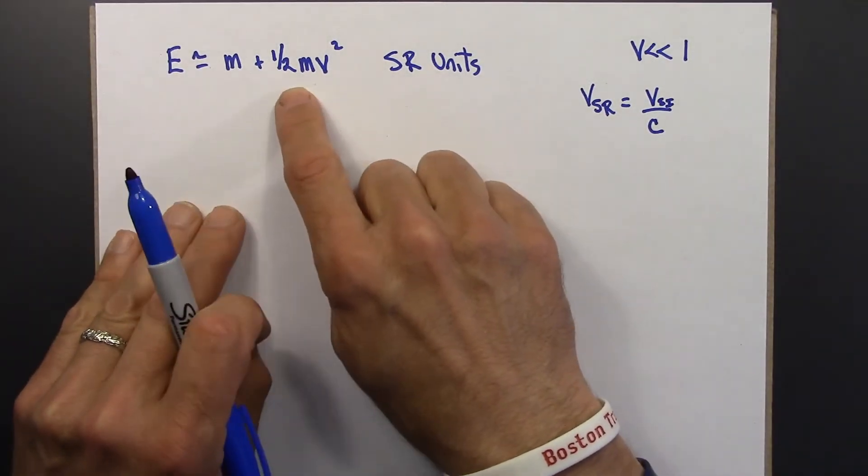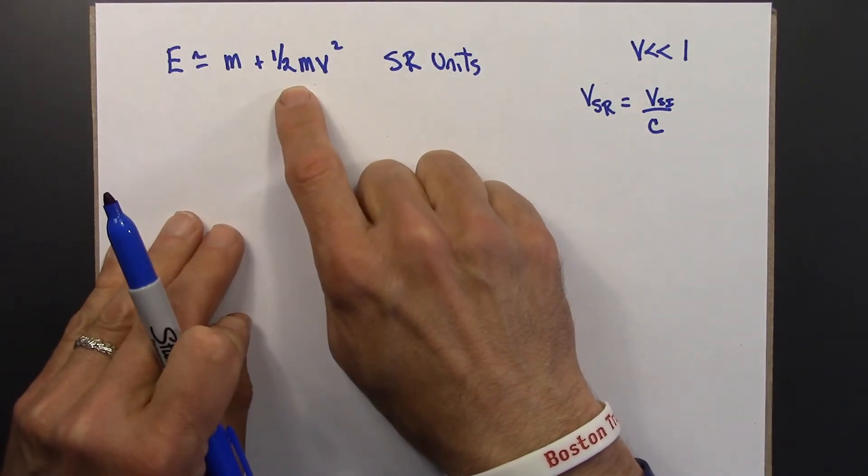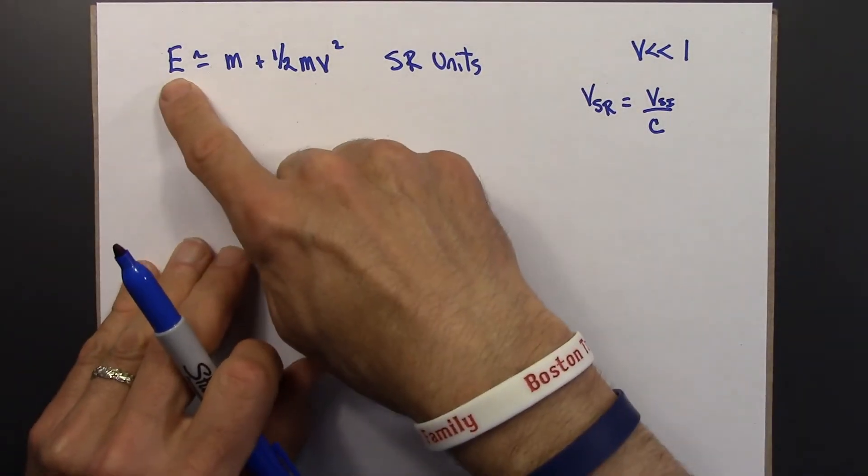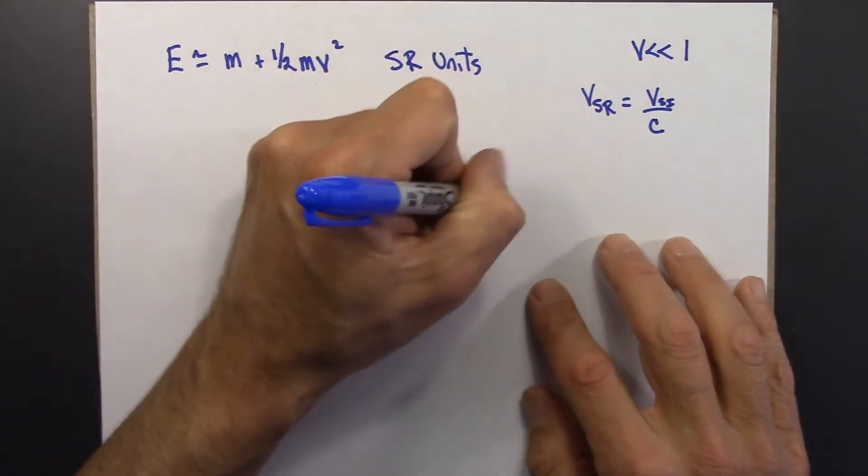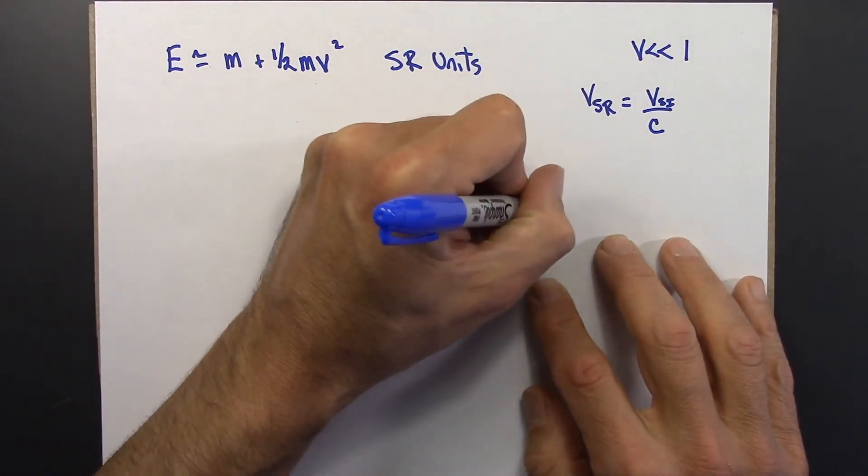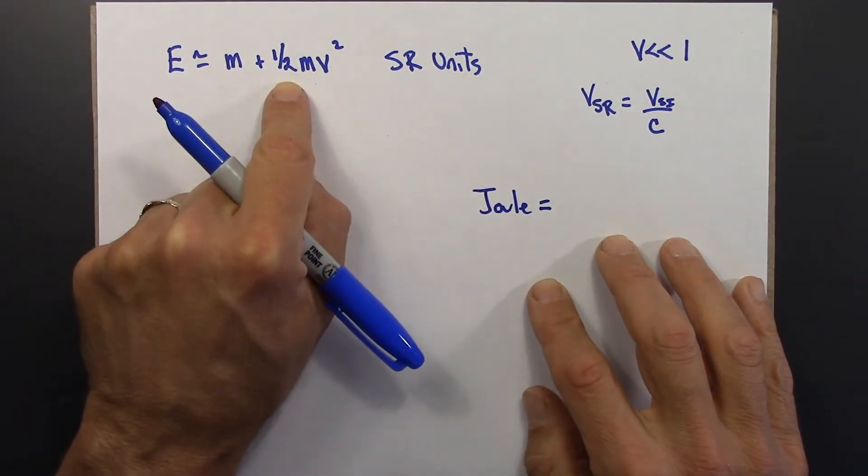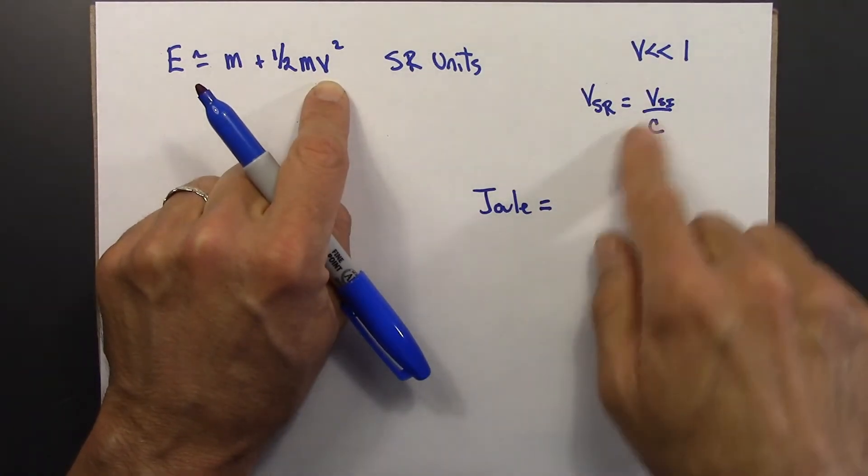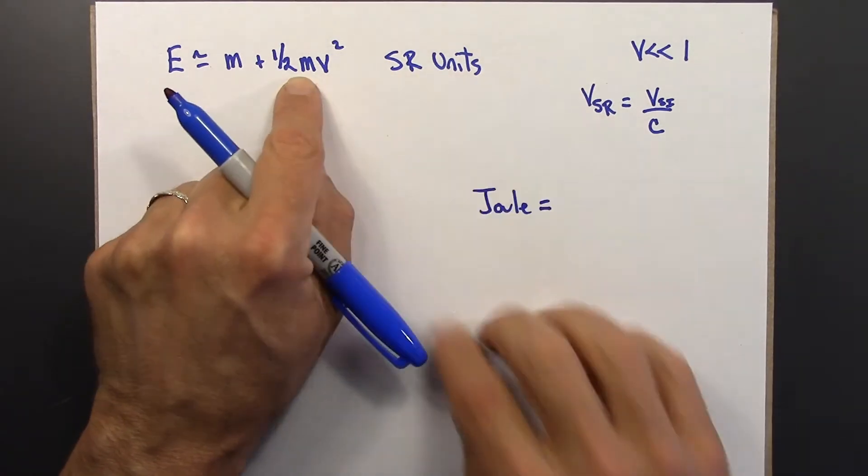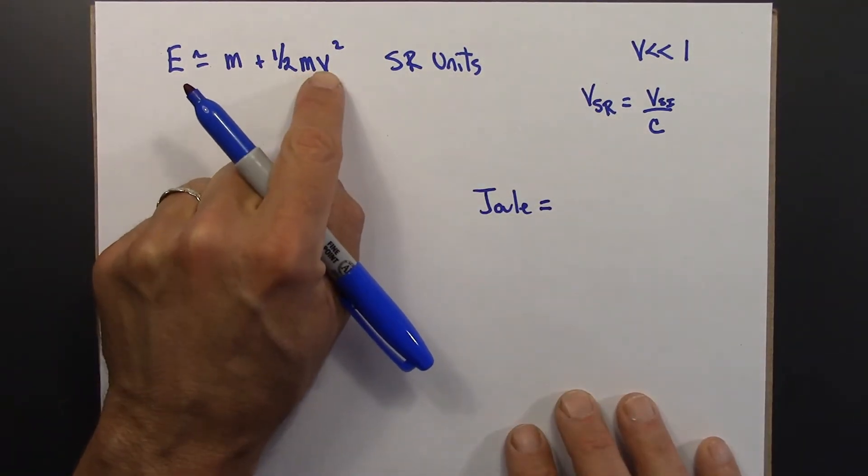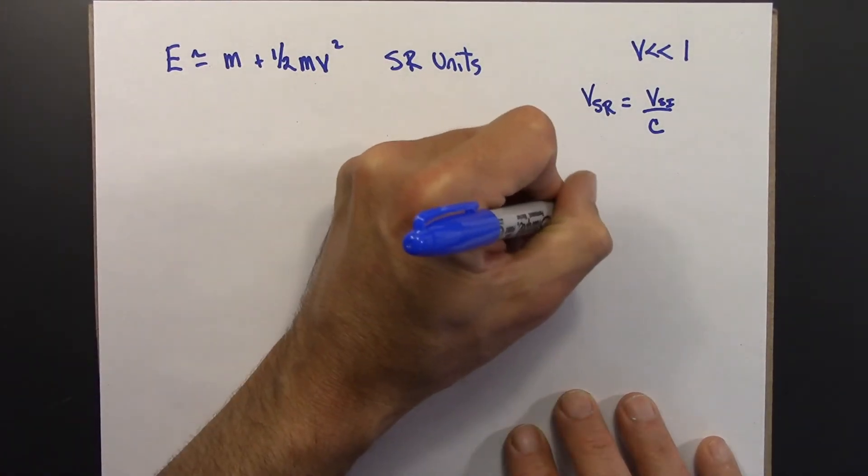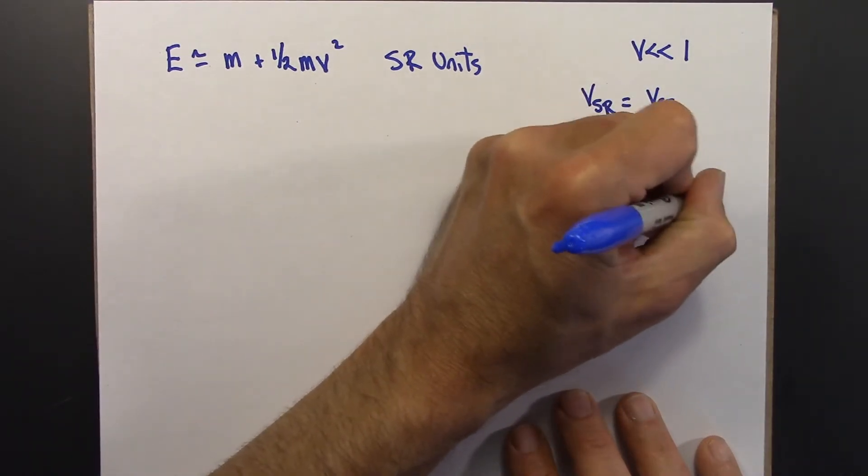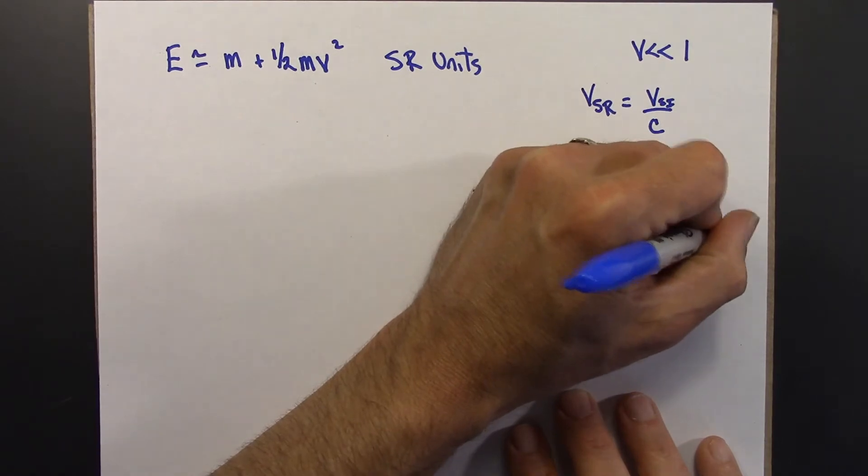Sometimes though, we might want to think about things in terms of regular units, SI units. So the unit of energy there is a joule. And we can figure out what a joule is by looking at this, and assuming we have meters per second here, SI units, metric units, and not these SR units. So M is kilograms. This is meters per second squared. So this is kilograms meters per second squared, or kilograms meters squared per second squared.